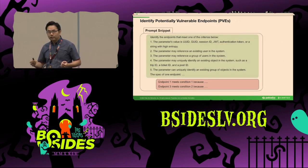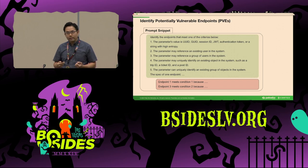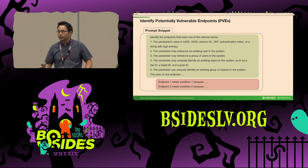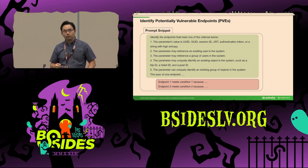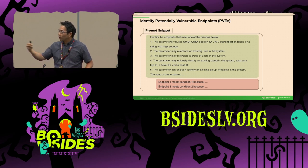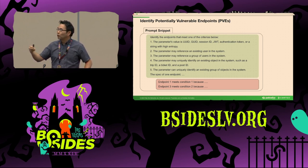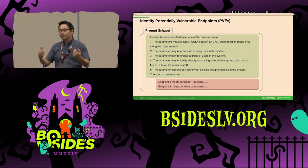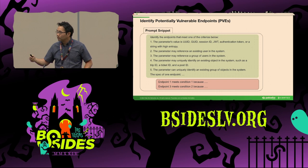Here is a snippet of the prompt we use to communicate with AI. This prompt instructs AI with a set of rules and examples to identify parameters that may reference sensitive information, and the AI returns the endpoints and parameters that meet any of those conditions.